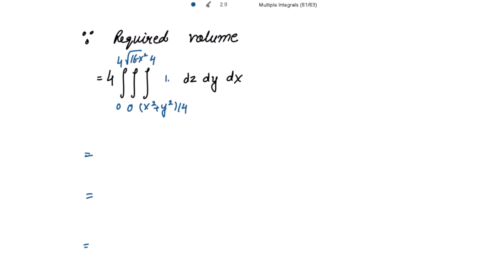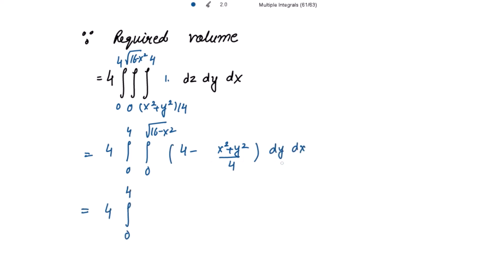Integrating with respect to z first, from 0 to 4 in x and 0 to √(16 − x²) in y, the integral of dz gives z evaluated from (x² + y²)/4 to 4. So we get 4 minus (x² + y²)/4. Then dy dx.